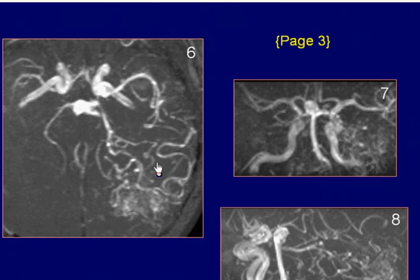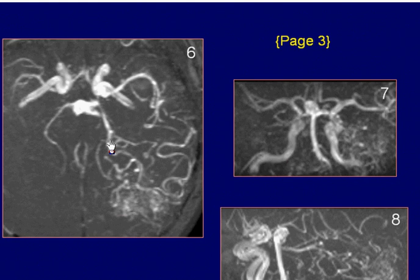MR angiogram shows abnormal dilatation of the tip of the basilar artery and a vascular lesion in the left occipital-parietal region. The arterial supply of the lesion is from branches of the left posterior and middle cerebral arteries. MR findings are consistent with AV malformation and basilar tip aneurysm.